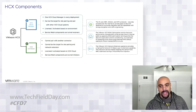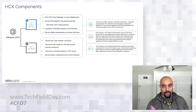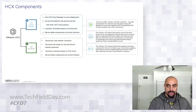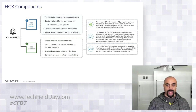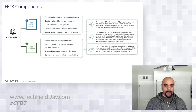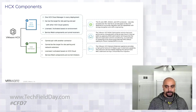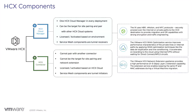There are three main appliances deployed: the interconnects, which handle intelligent routing using host-based replication, vMotion, and NFC for cold migration; the WANopt appliance; and the network extension appliance, which also gets deployed on both sides.